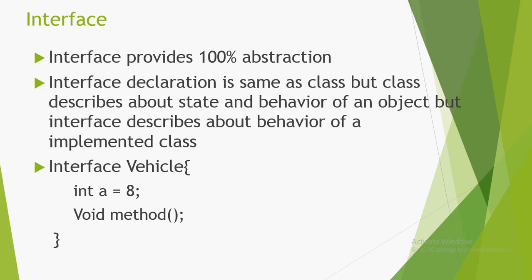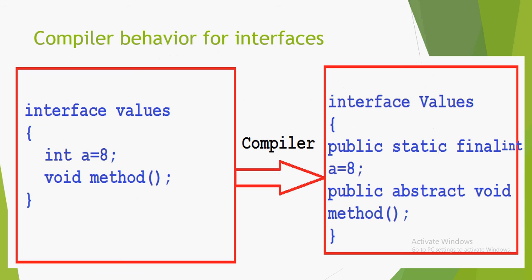Now we will see interfaces. Interface provides 100% abstraction. Interface is similar to a class but differs in declaration — we declare it using the interface keyword followed by the interface name. An interface contains only constant variables and abstract methods. If we don't declare them explicitly as constant or abstract, the JVM or compiler will automatically treat them as constant variables by adding public static final, and treat methods as abstract by adding public abstract. This is compiler behavior.